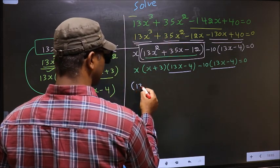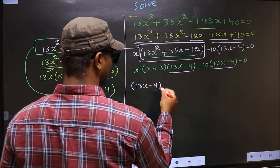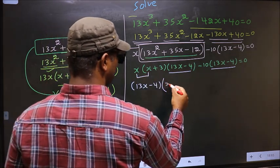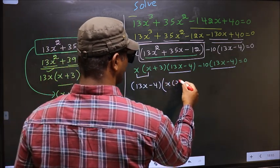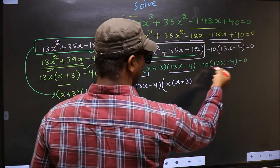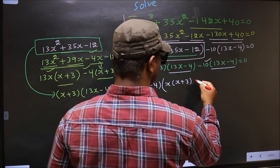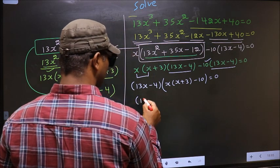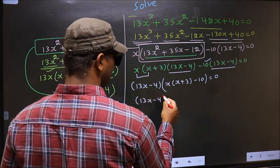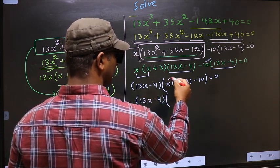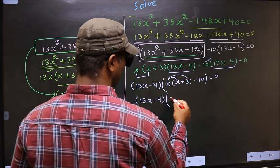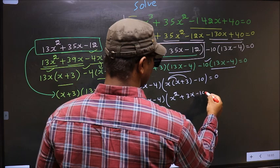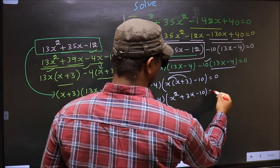So (13x - 4) is outside. Over here we are left with x(x + 3), and over here we are left with -10, equal to 0. Now for (13x - 4), open up the brackets: you get x² + 3x - 10 = 0.